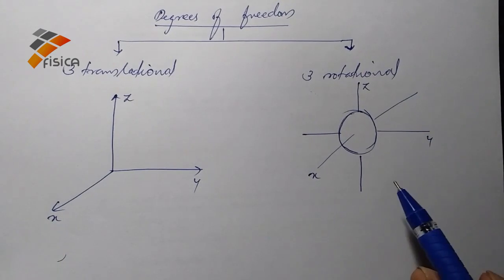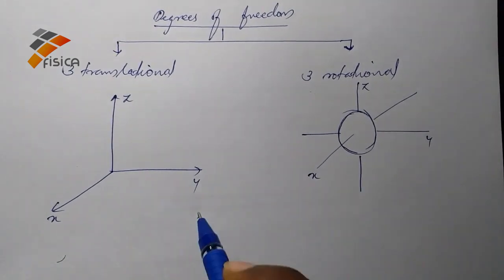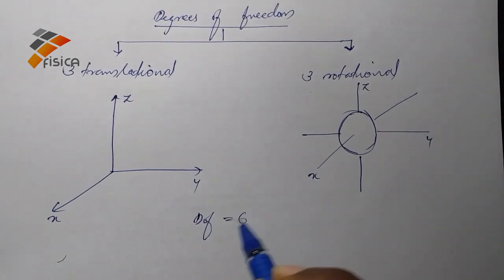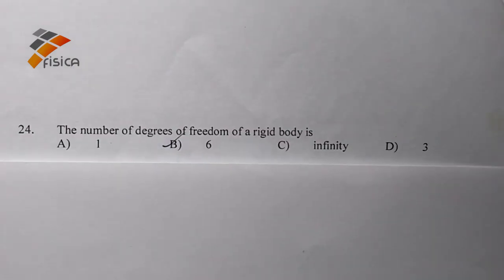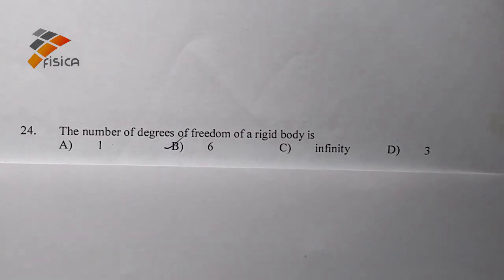So total degrees of freedom of a rigid body is six. So option B is the right answer.